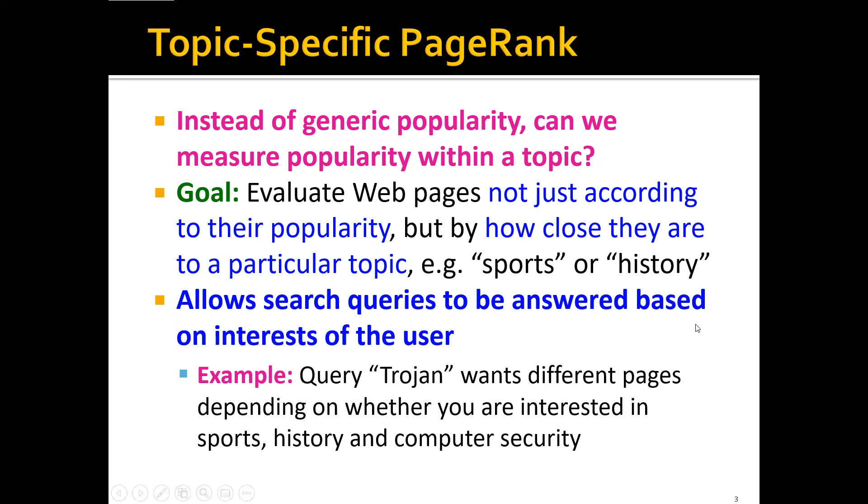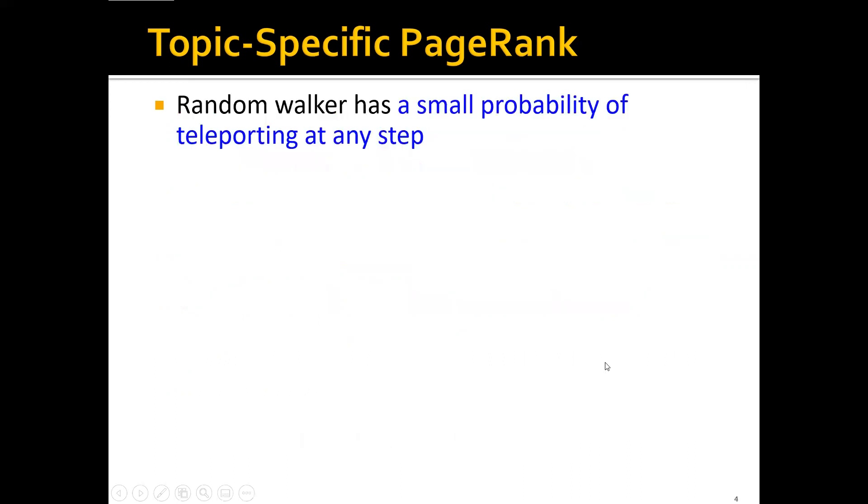And this will allow the search query to be answered based on the interest of the user. Therefore, sometimes we'll also call topic-specific PageRank personalized PageRank. And an example would be a user query with Trojan, and this query wants different pages depending on whether the user is interested in sports or history or computer security.